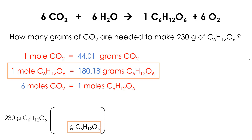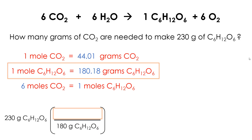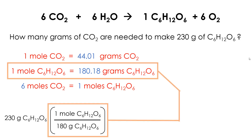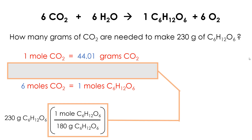I turn this equality relationship into a fraction by putting one part on the bottom — whichever part I need. In this case it's the grams of glucose part, and the other part goes on the top: one mole of glucose, using exactly the same number, unit, and chemical. This fraction comes from this equality relationship, and once I use it I won't use it again.